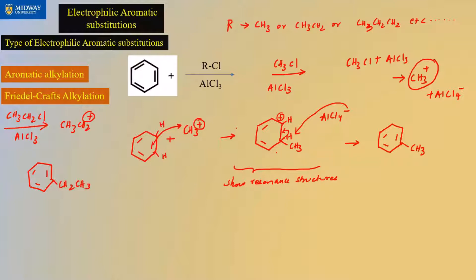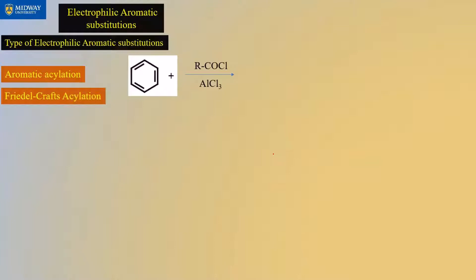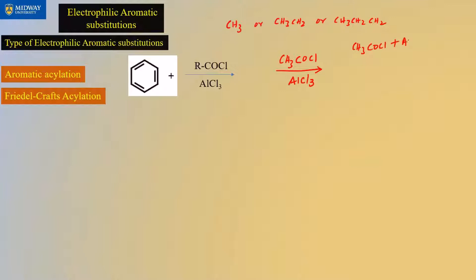That's alkylation. Acylation is very similar. Again, R can be CH3, CH3CH2, and so on. For instance, if R is CH3, then we have CH3COCl and AlCl3. When these two react — CH3COCl plus AlCl3 — you generate CH3CO+ as your electrophile, plus AlCl4−.